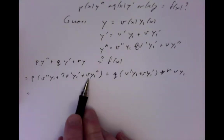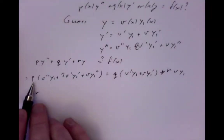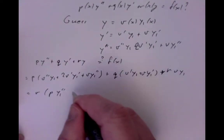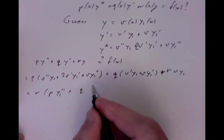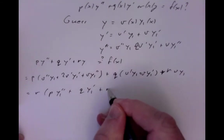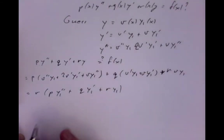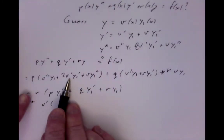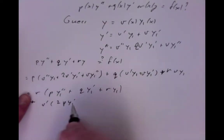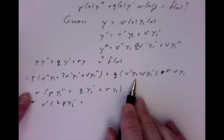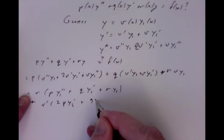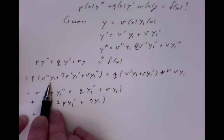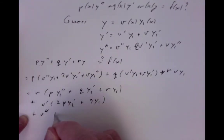Collecting terms: the v-terms give v·(p·y1'' + q·y1' + r·y1), the v'-terms give (2p·y1' + q·y1)·v', and the v''-term is p·y1·v''.